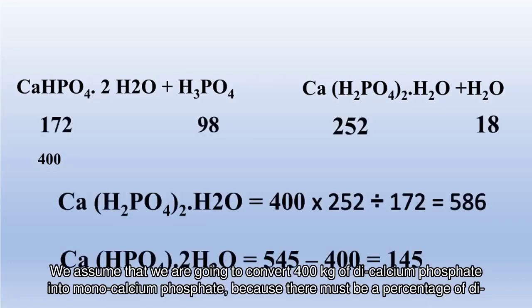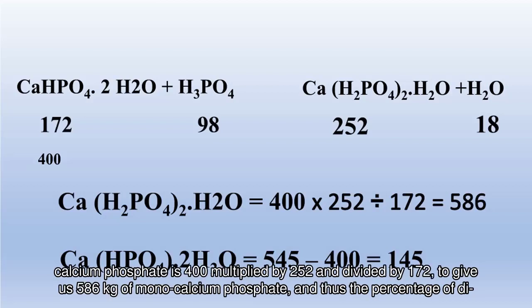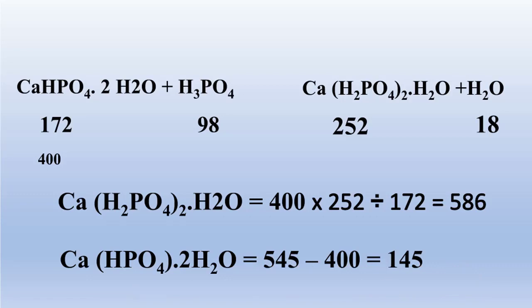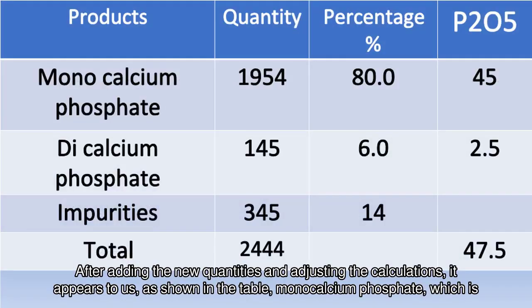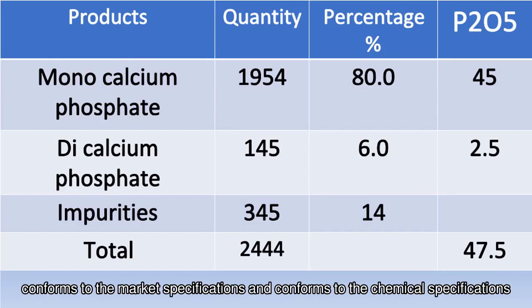We assume that 400 kilograms of dicalcium phosphate will be converted into monocalcium phosphate, because a certain percentage of dicalcium phosphate must remain so that heavy and unwanted elements remain in a form unavailable to plants. The monocalcium phosphate produced is 400 × 152 ÷ 172 = 586 kilograms, leaving only 145 kilograms of dicalcium phosphate remaining. After adjusting the calculations, the final product contains 80% monocalcium phosphate with 45% phosphorus oxide and 2.5% phosphorus as dicalcium phosphate — conforming to market and chemical specifications.